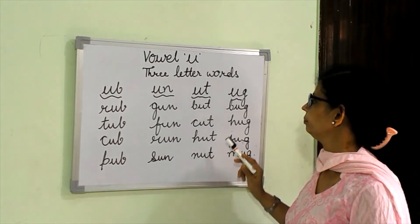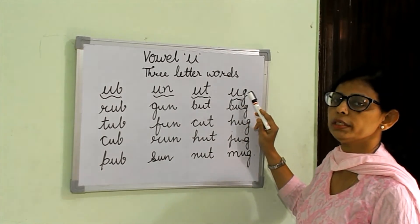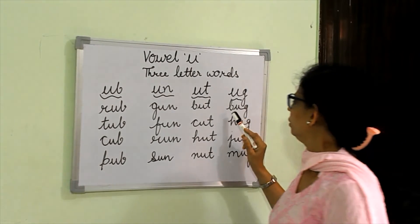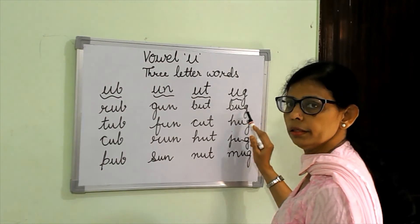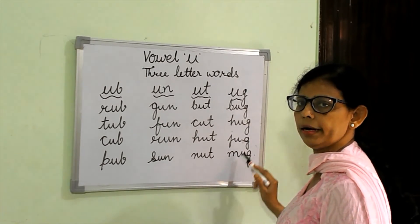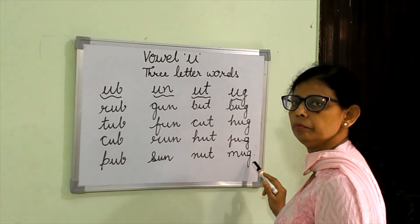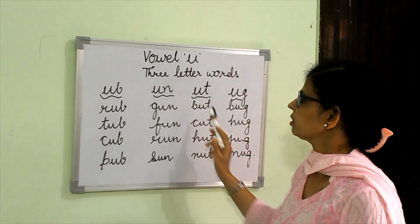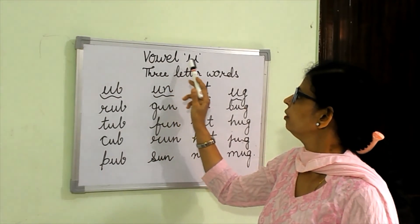Here the ending sound is UG. Here is the word B, U, G — bug. H, U, G — hug. J, U, G — jug. And the last one is M, U, G — mug. Did you understand the three-letter words of vowel U?